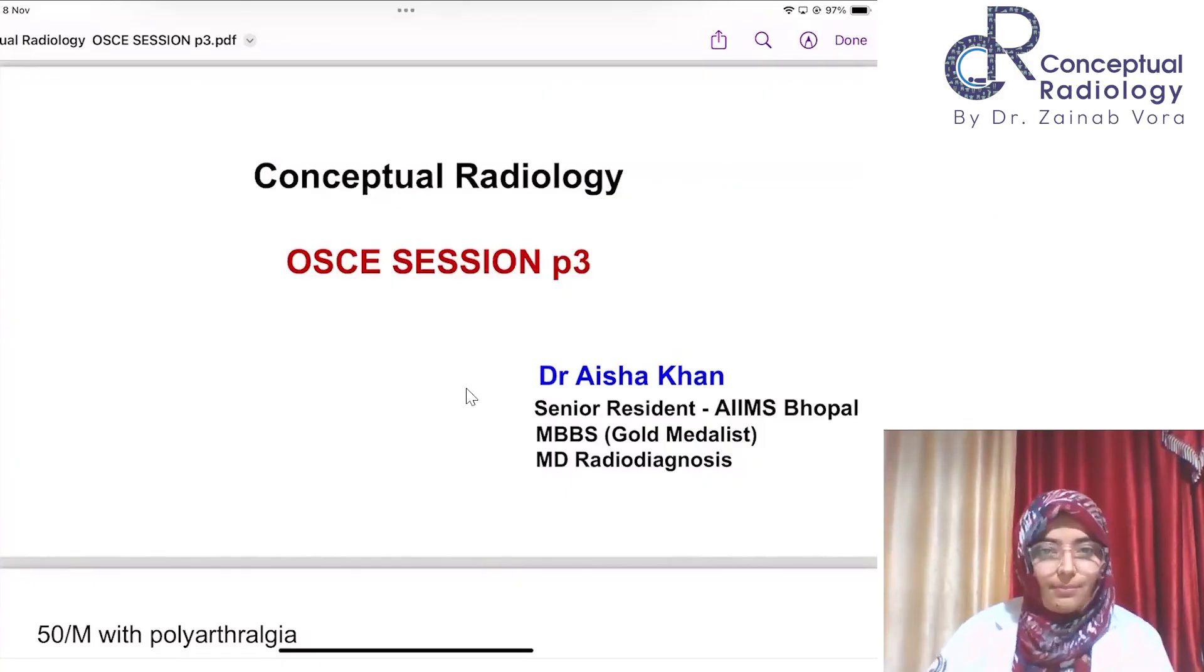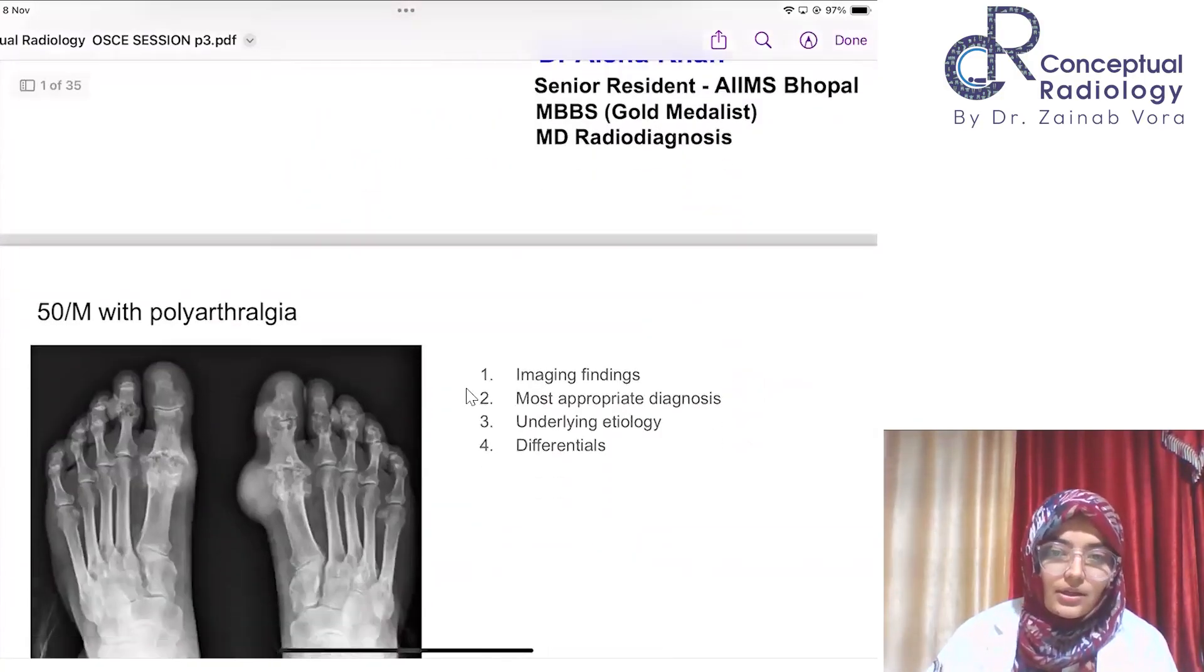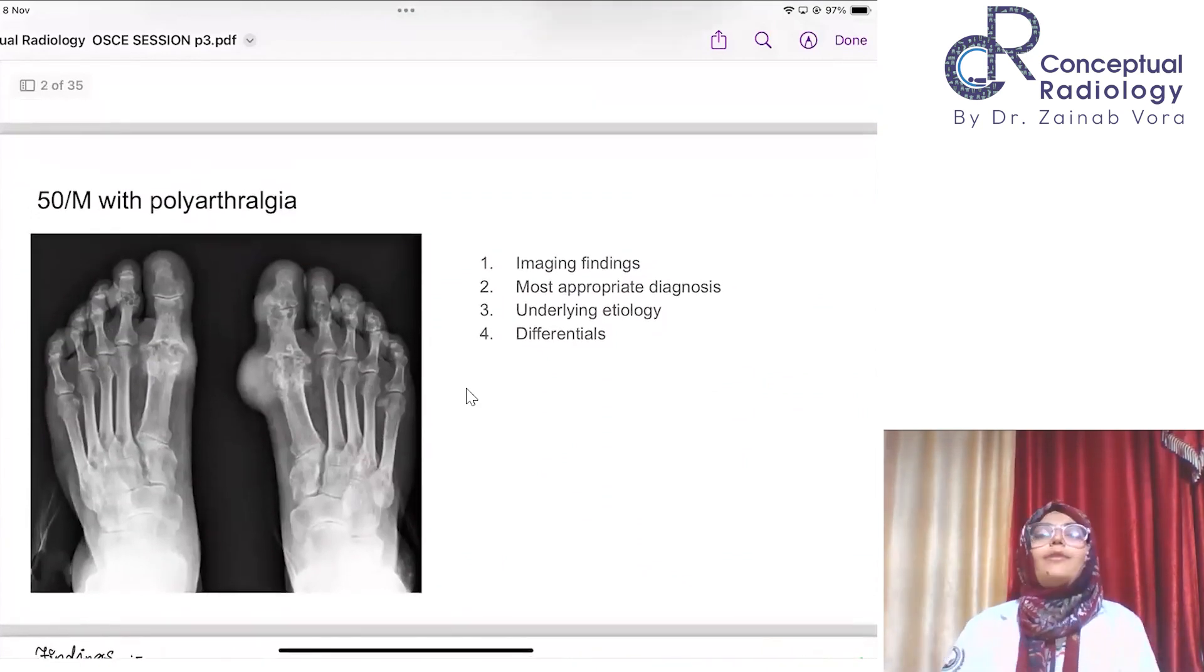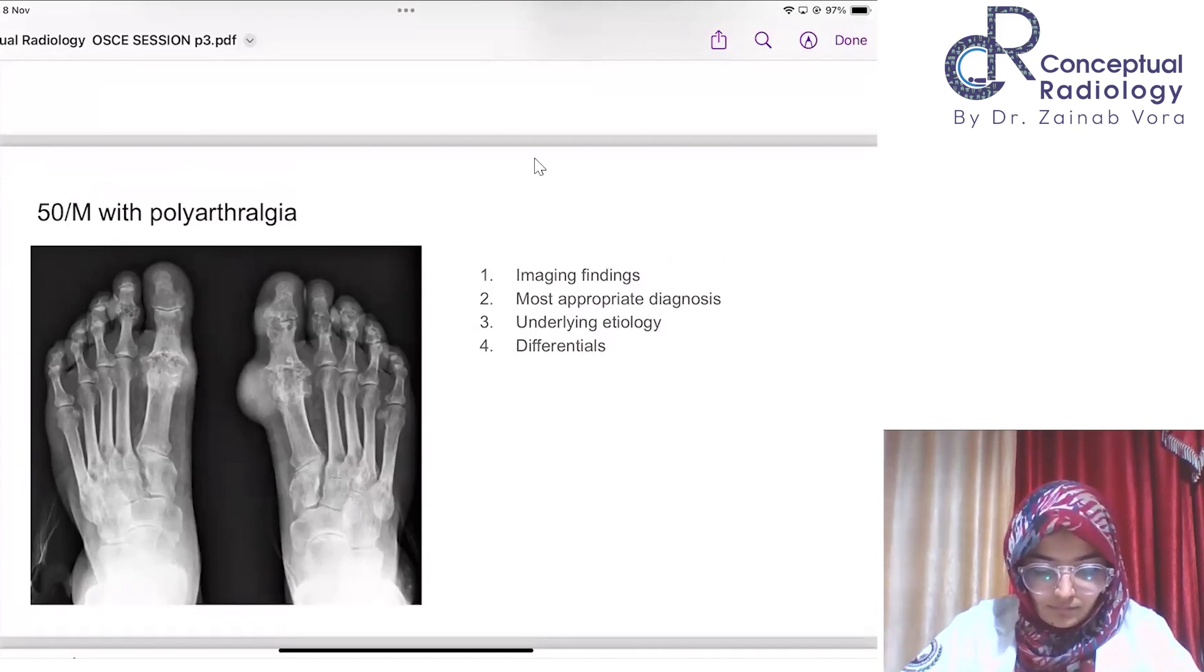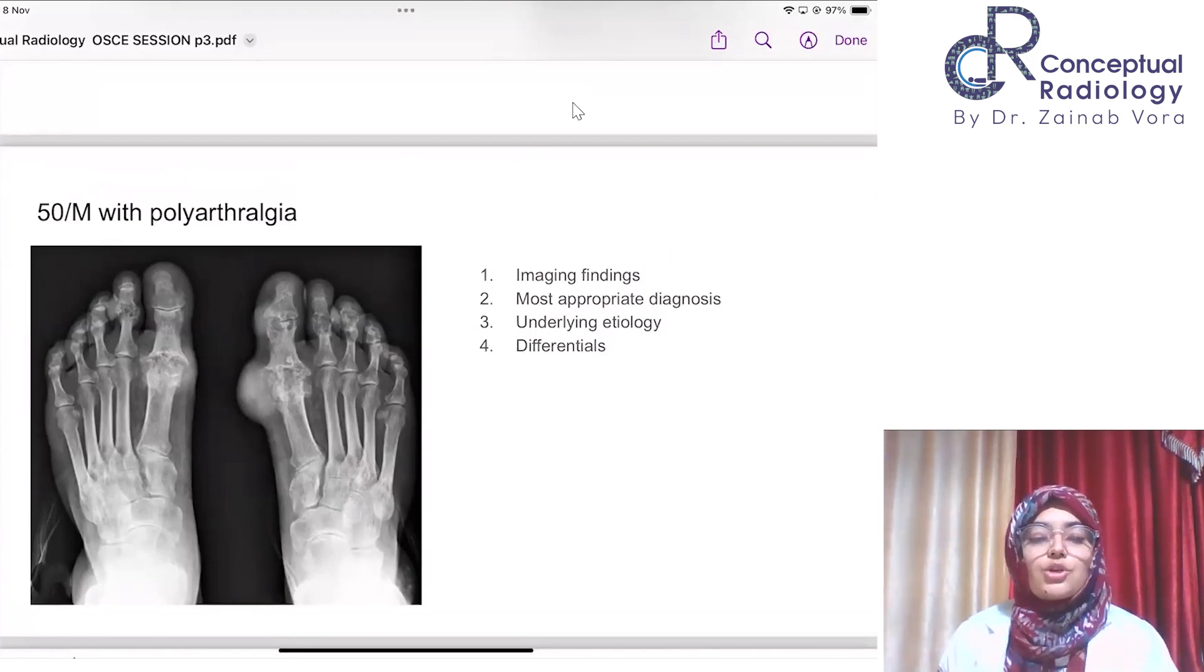I'm starting with OSCE number one. Short history: 50-year-old male with polyarthralgia. Imaging findings, most appropriate diagnosis, underlying etiology, and any differentials. You can write in the chat, but copy on pen and paper. We want to simulate the exam environment so that we don't freeze there on exam day. This is all like a warm-up. You have to do it no matter what, just overcome that inertia, whatever is coming to your mind.